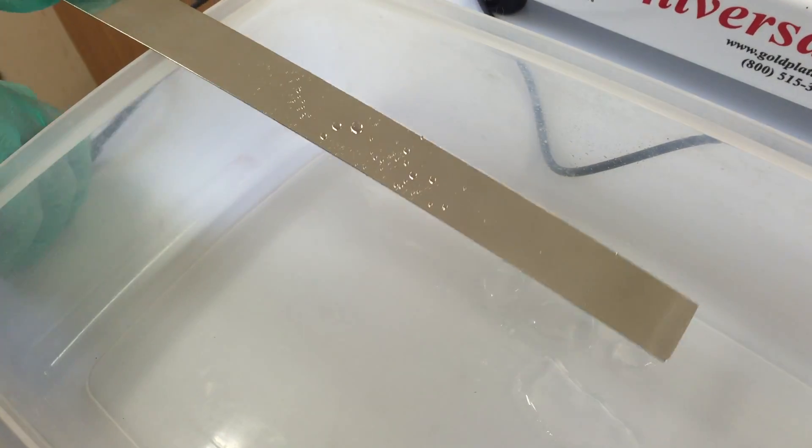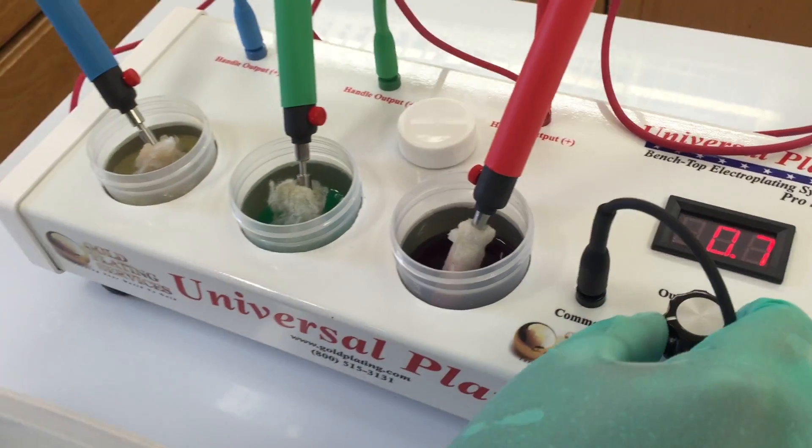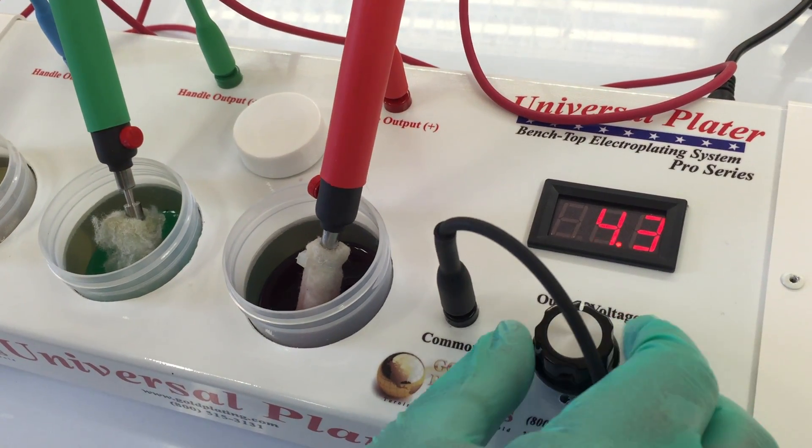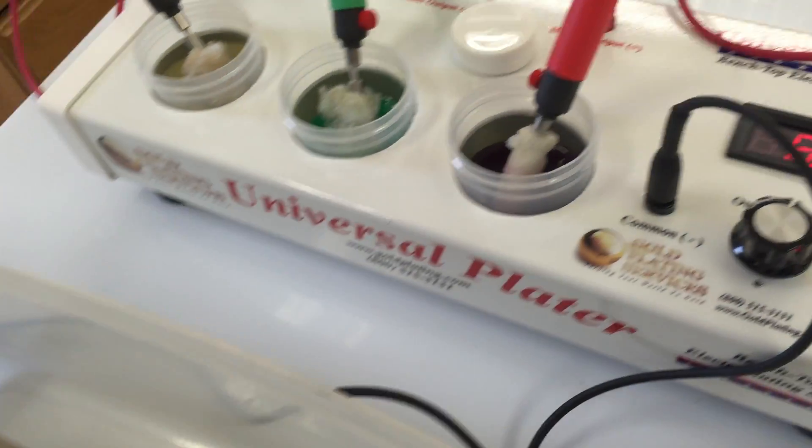Now, the ElectroClean step luckily fixes that. What kind of voltage should we want to have for the ElectroClean? Well, let's try, let's start out at six volts. Six or seven, that's good. We'll start out six.